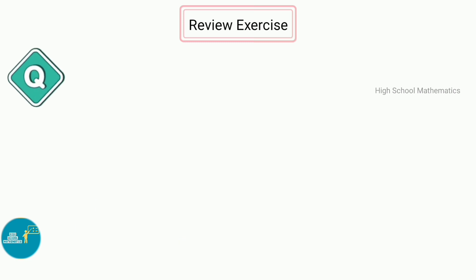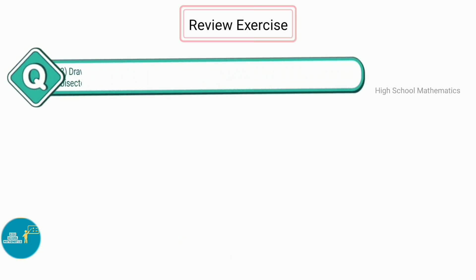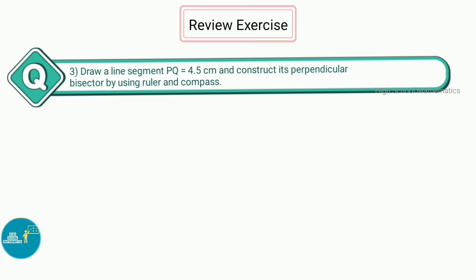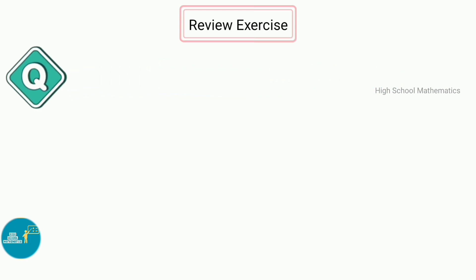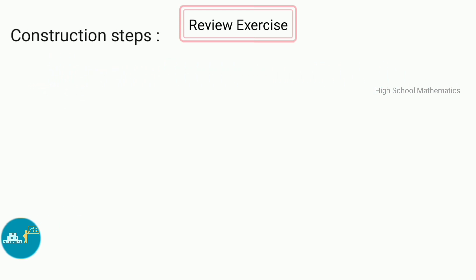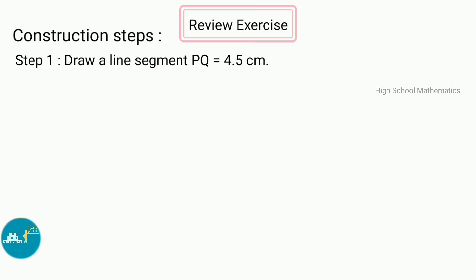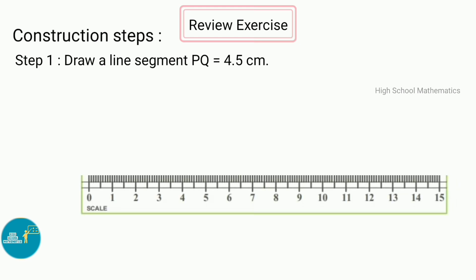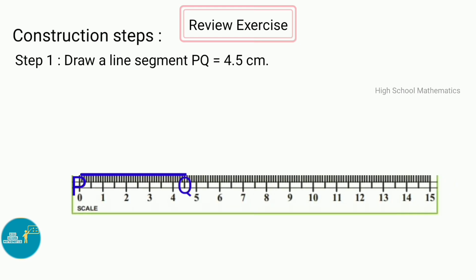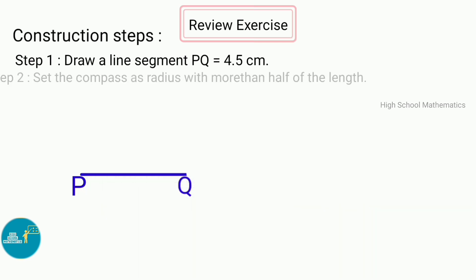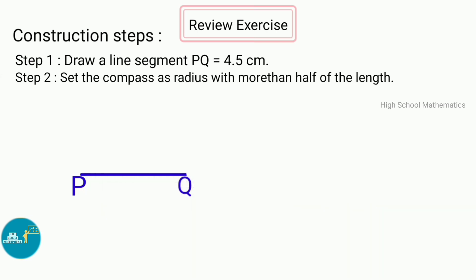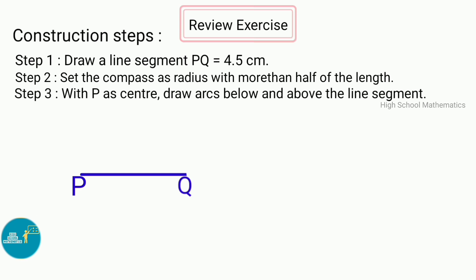Question number 3: Draw a line segment PQ equal to 4.5 cm and construct its perpendicular bisector using ruler and compass. Step 1 — draw a line segment PQ equal to 4.5 cm. Step 2 — set the compass radius to more than half the length of PQ.